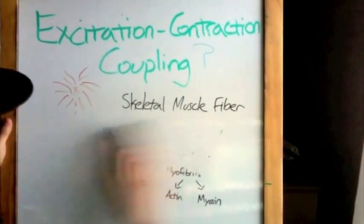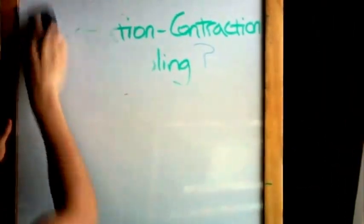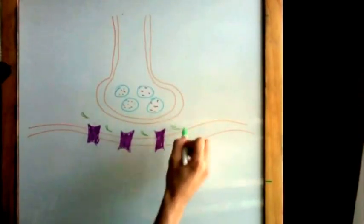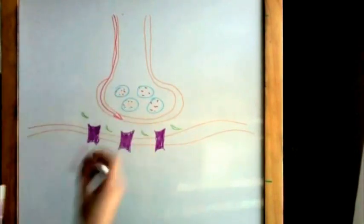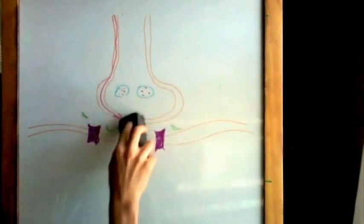Now we will take a look at how these myofibrils are stimulated to cause a contraction in a muscle fiber. Okay, let's begin. In order for a muscle to contract, there has to be an action potential that sets things off. An action potential is created in the following way.